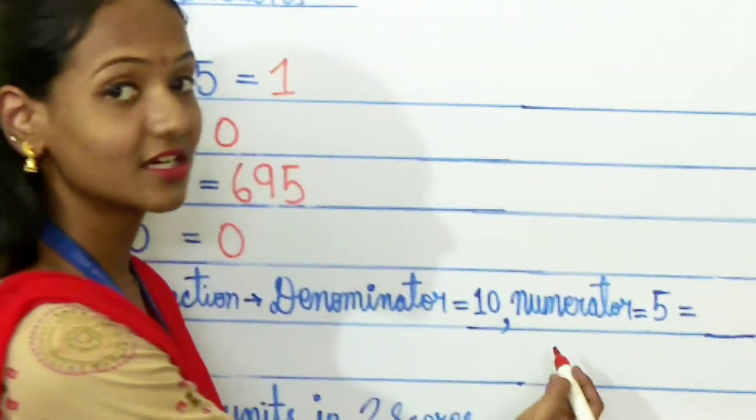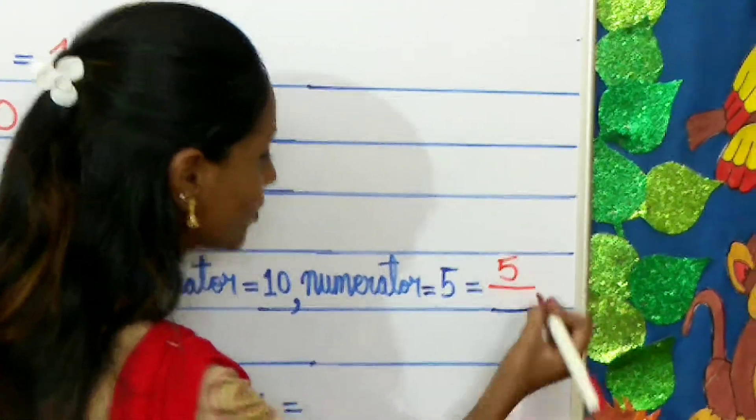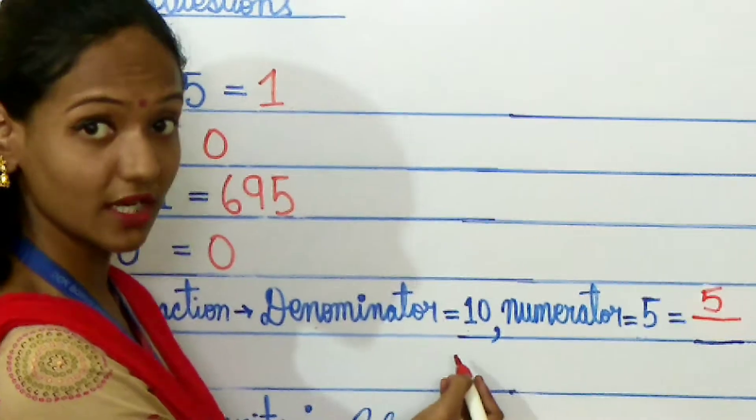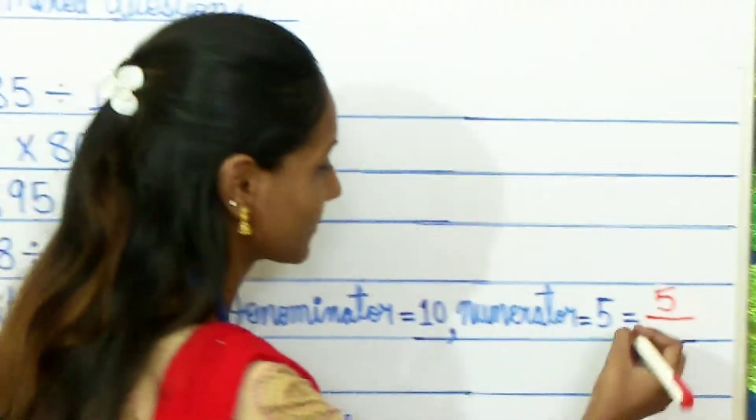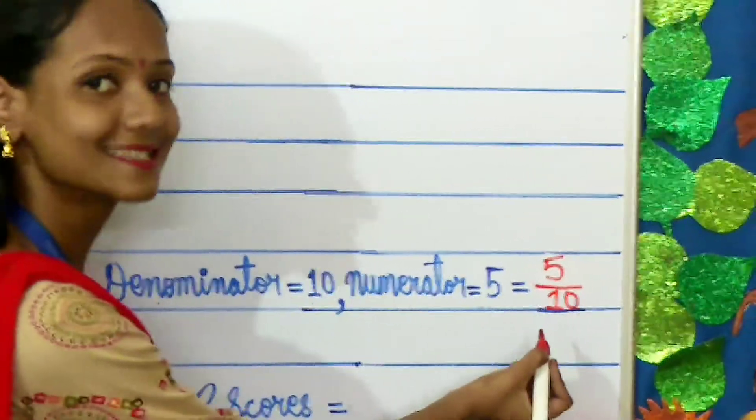Here the numerator is 5. So, first we will write 5. And the number below the line, that will be your denominator, will write 10. So, here we have written the number in fraction. 5 by 10. Moving on to the sixth question.